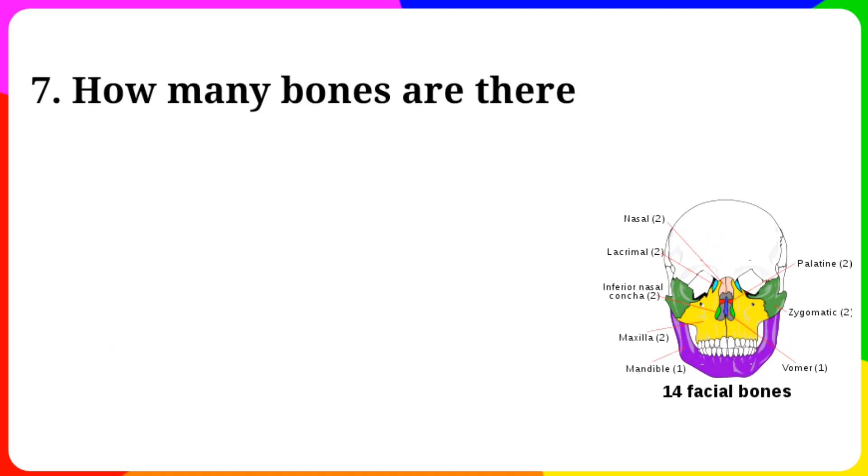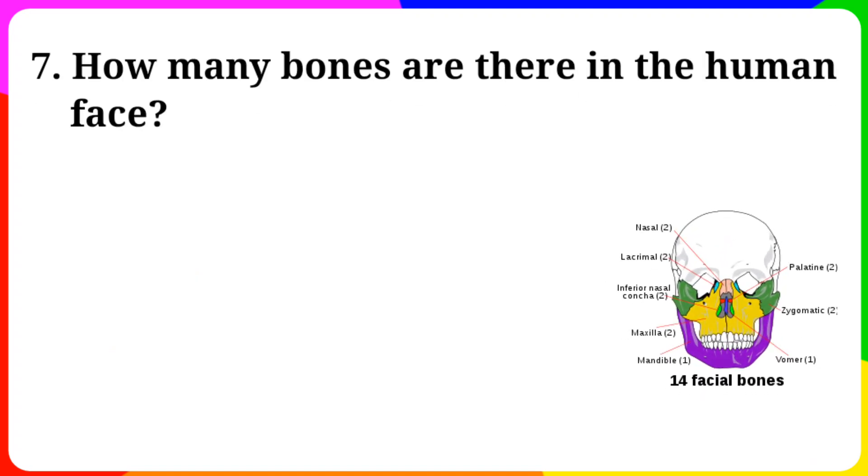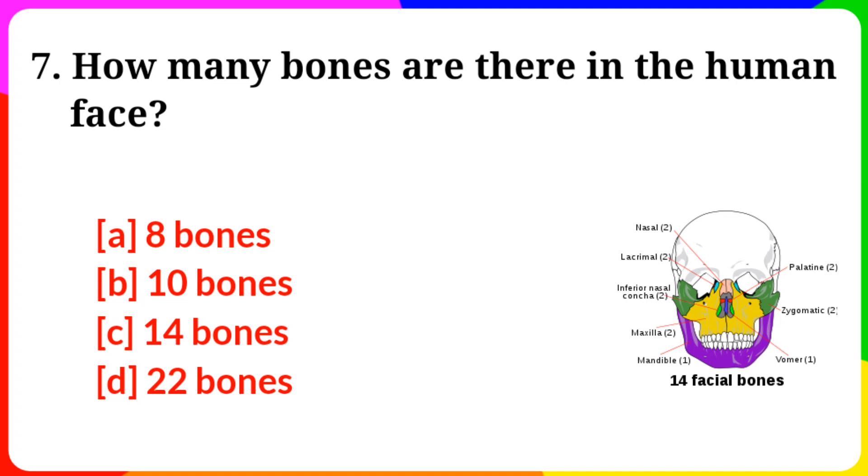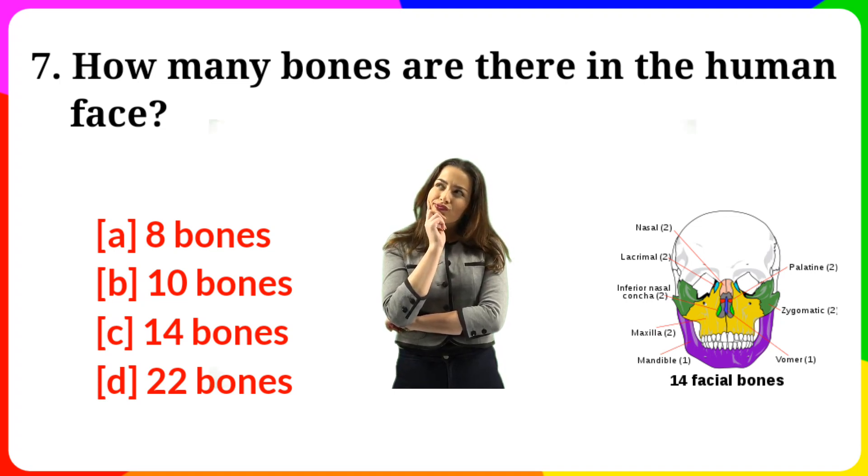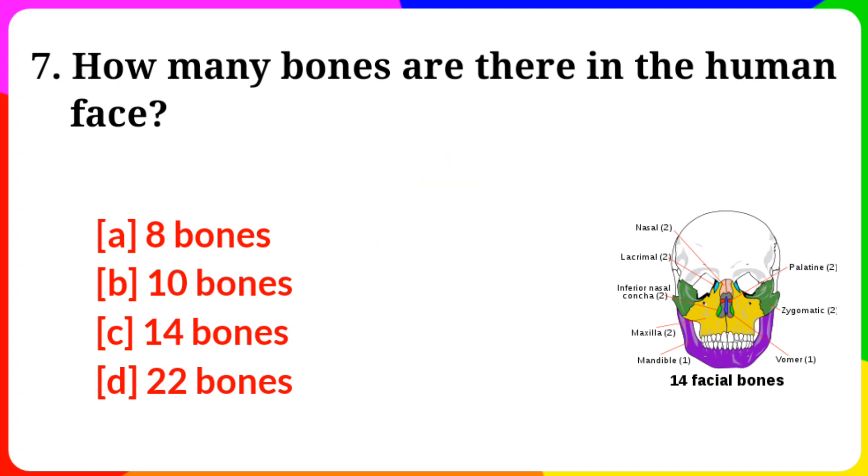Question number 7. How many bones are there in the human face? Option A: 8 bones. B: 10 bones. C: 14 bones. D: 22 bones. Answer is option C, 14 bones.